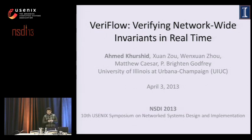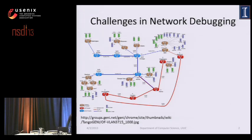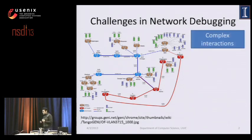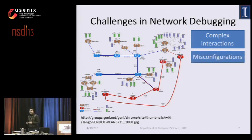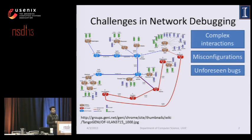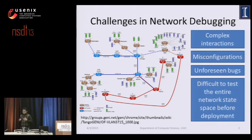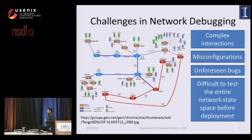Let us look at some challenges in network debugging. Modern networks are large and complex, consisting of hundreds or even thousands of devices from different vendors of different types. Complex interactions between these devices running different control-plane protocols makes network configuration quite a challenging job for network operators, which often leads to misconfigurations. There also exist unfortunate bugs that may be present in network software, which are very difficult to detect before the software is deployed into the network, and it is very difficult to exhaustively test every possible event scenario that can occur when the network is in operation.